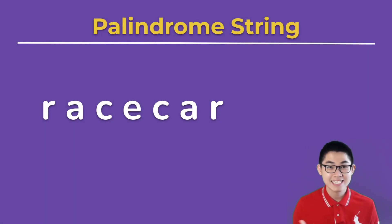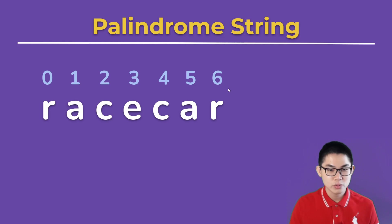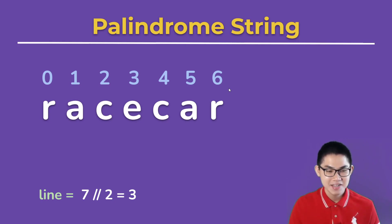Now let's take a look at the second solution. Using 'racecar' as an example, we put the indexes onto this word. The next step is to determine something called a 'line'. The line is equal to the number of letters — there are seven letters in total.